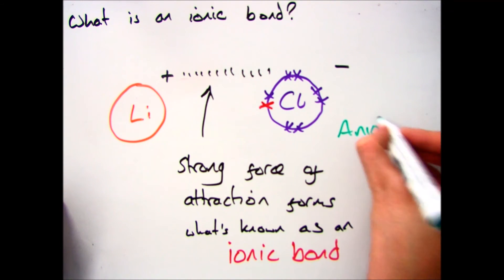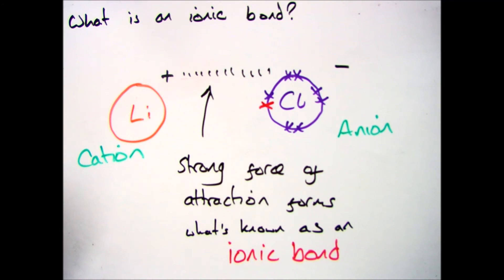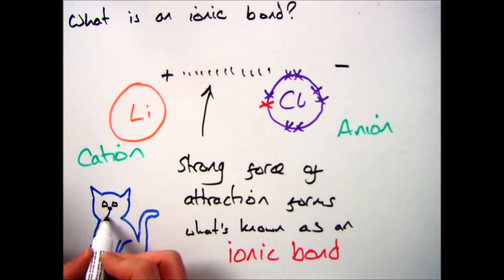Now what you also need to remember is the names of the ions. If it's negative, it's an anion. If it's positive, it's a cation.